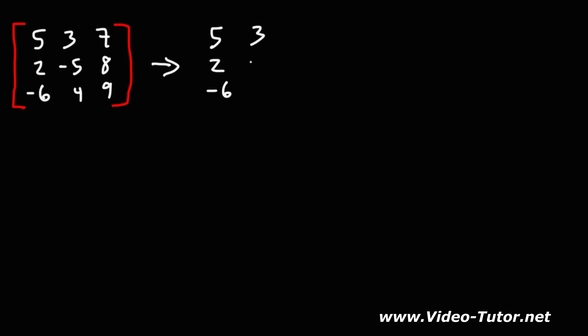And then we're going to write the second column: 3, negative 5, 4, and then the third column: 7, 8, 9. And then let's write the first column: 5, 2, negative 6, and then the second column again.